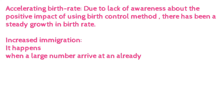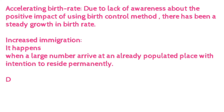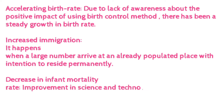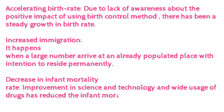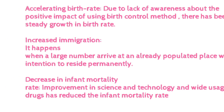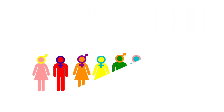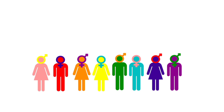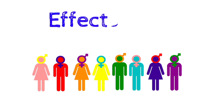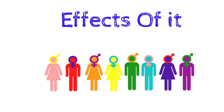The second cause is immigration, which happens when a large number of people arrive at an already populated place. The third reason is decrease in infant mortality. Improvement in science and technology and the use of better drugs has decreased infant mortality by a significant number. Now we will look at the impact and effects of overpopulation and exponential growth of population.